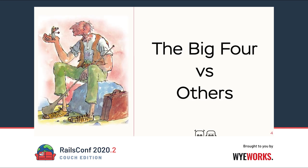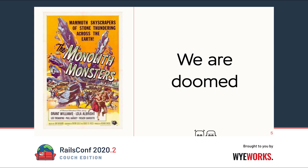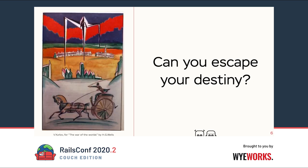Unfortunately, majestic monoliths are like black swans. We know they exist, but we don't see them very often. A typical Rails application is doomed to become a monolithic monster. And the question is: how to prevent this? How to keep our application maintainable as it grows?